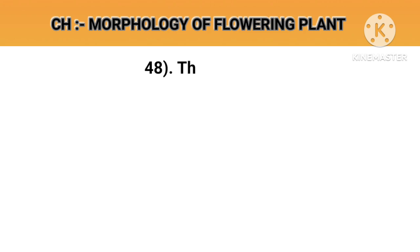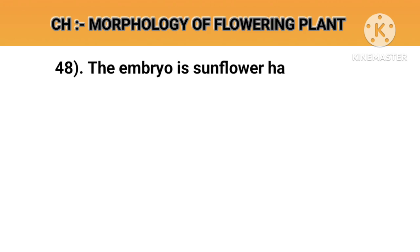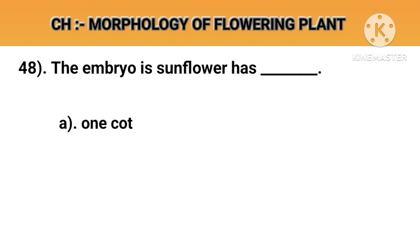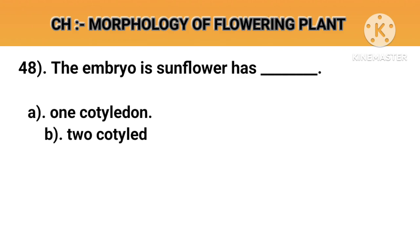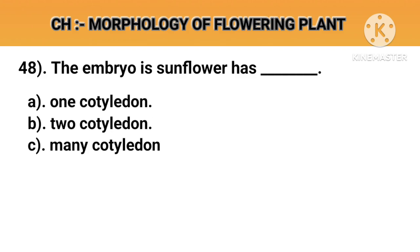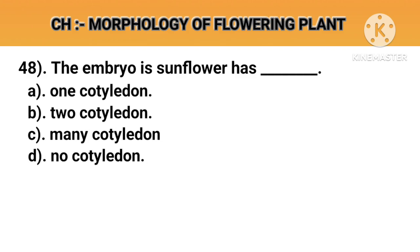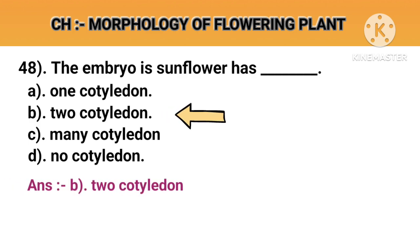Question number 48. The embryo of sunflower has. Option A: One cotyledon. Option B: Two cotyledons. Option C: Many cotyledons. Option D: No cotyledon. Answer B: Two cotyledons.